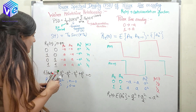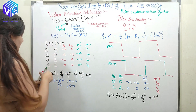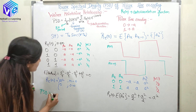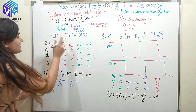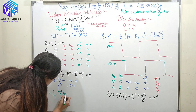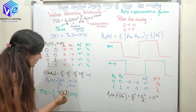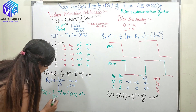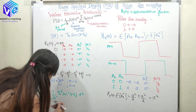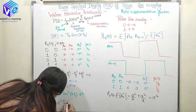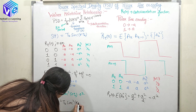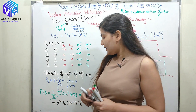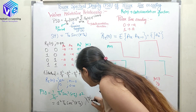Now I substitute S(f) and r(τ,n) into the Wiener-Kinchen relationship. The power spectral density becomes (1/T_b) · [T_b · sinc(f·T_b)]² · A², which simplifies — the T_b terms cancel — to give the final result: PSD = A²·T_b · sinc²(f·T_b). As you can see, there is no DC component in this expression.